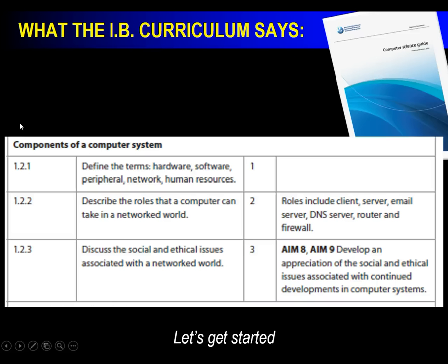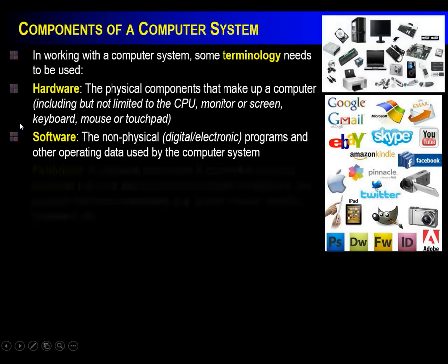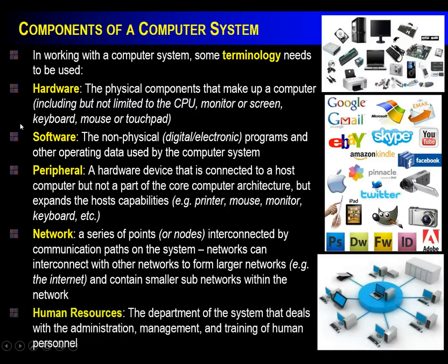Social and ethical issues associated with the network world are also part of the curriculum. Now let's break down some of that terminology. Hardware — the easiest way to define it is the stuff you can touch. So a keyboard is hardware, monitors are hardware, memory sticks are hardware, a CPU is hardware. Software is the stuff you can't touch because it's electronic. A peripheral is a device connected to a host computer but not part of the core computer architecture — it expands the host's capabilities. Examples include printer, mouse, monitor, and keyboard.